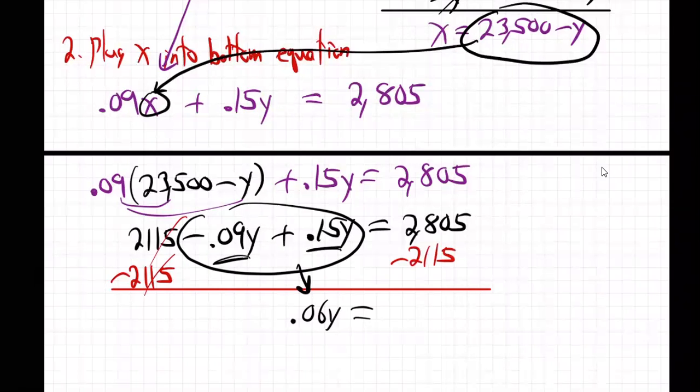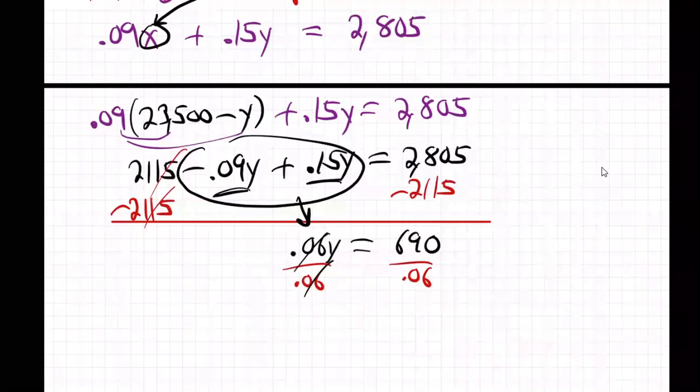And we get these two, 0.06Y, and then subtract those other two, and what do you get? You get 690. Last step, divide by the 0.06. And boom. So Y equals 11,500. So there's Y.